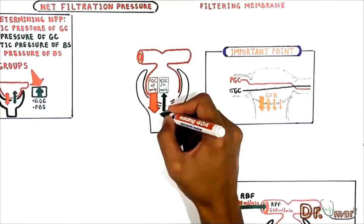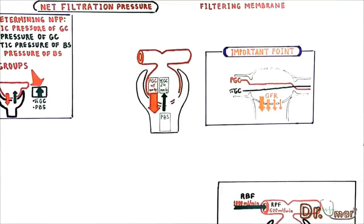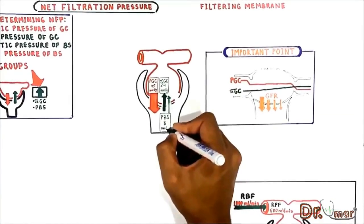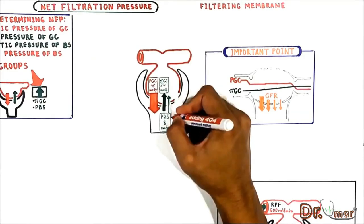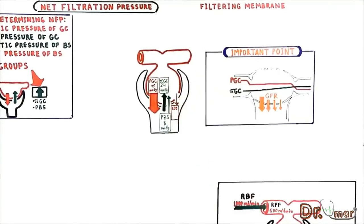The third factor is hydrostatic pressure in Bowman's space. This force opposes filtration; it is roughly 8 mmHg, fairly constant, and does not affect the rate of filtration. The fourth factor is oncotic pressure in Bowman's space, which promotes filtration. Under normal conditions, the concentration of protein in the glomerular filtrate is so low that the oncotic pressure of Bowman's capsule fluid is considered to be zero.